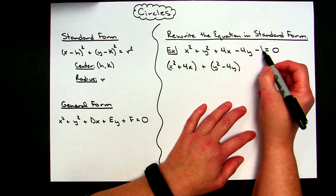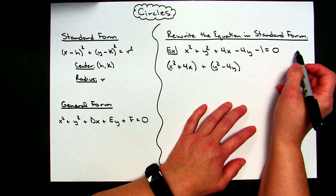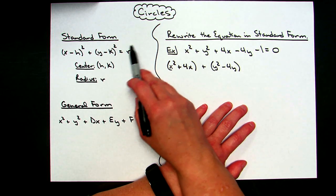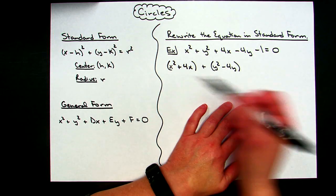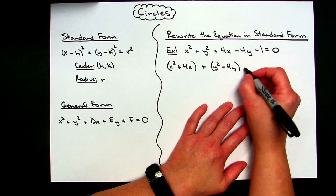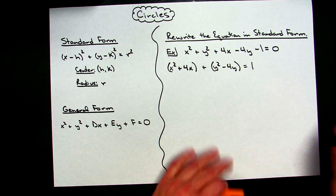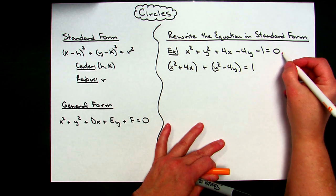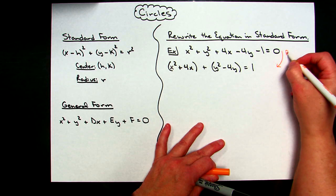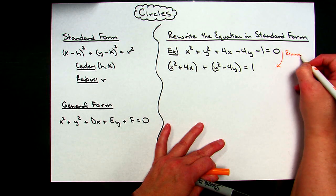Now I'm going to take this 1 and move it over to the right-hand side because ultimately I am going to have a radius over there on that right-hand side when I get done. So I'm going to add 1 to both sides and put that over there. All I did in that first step is rearrange terms.